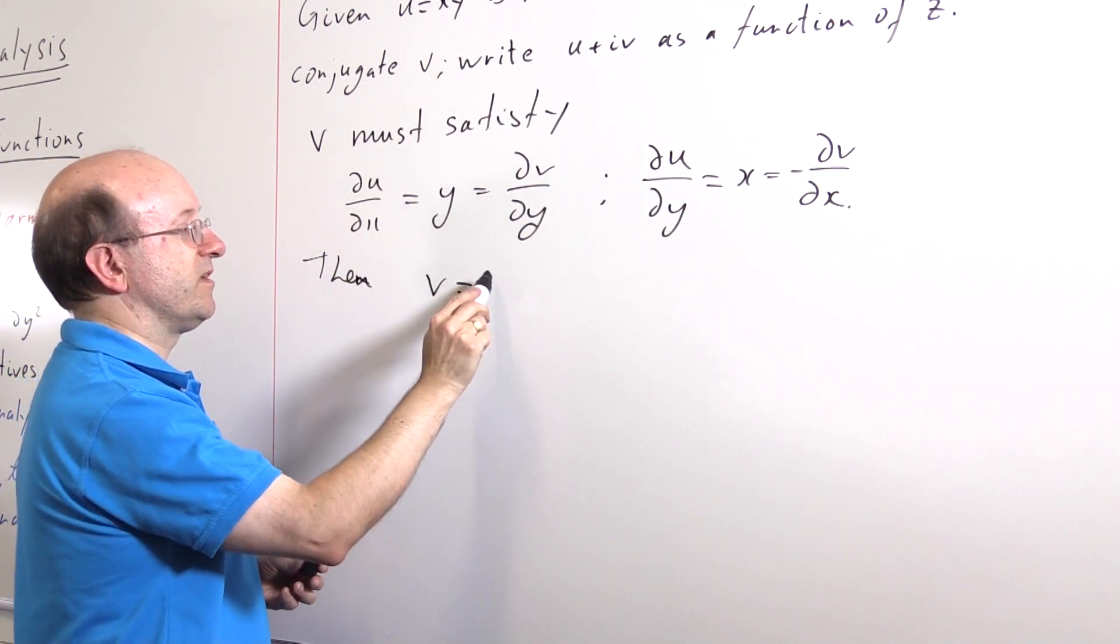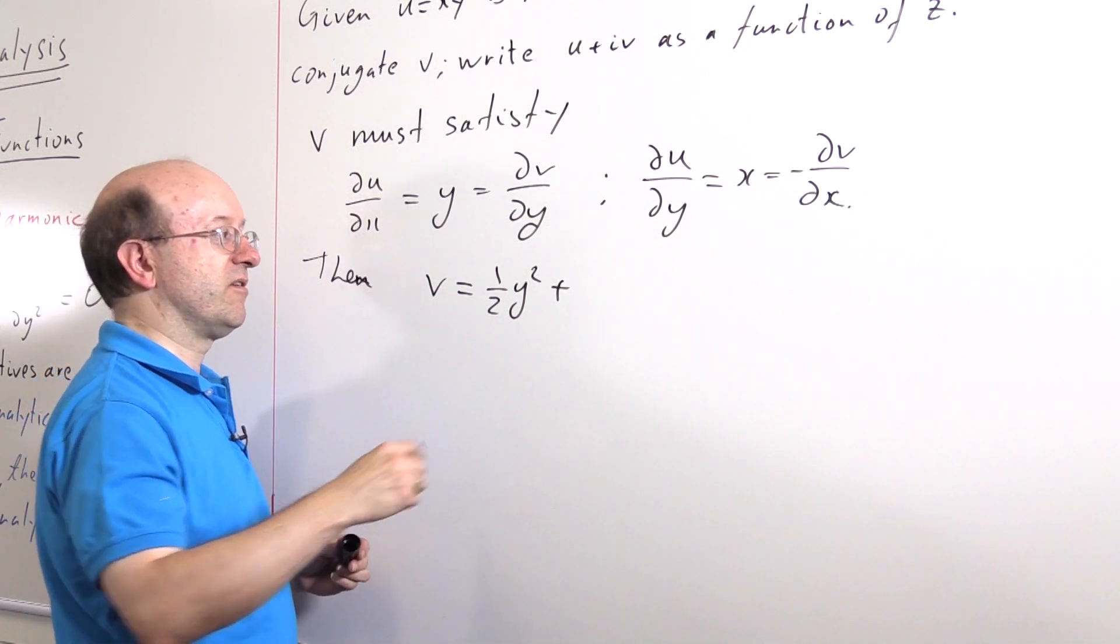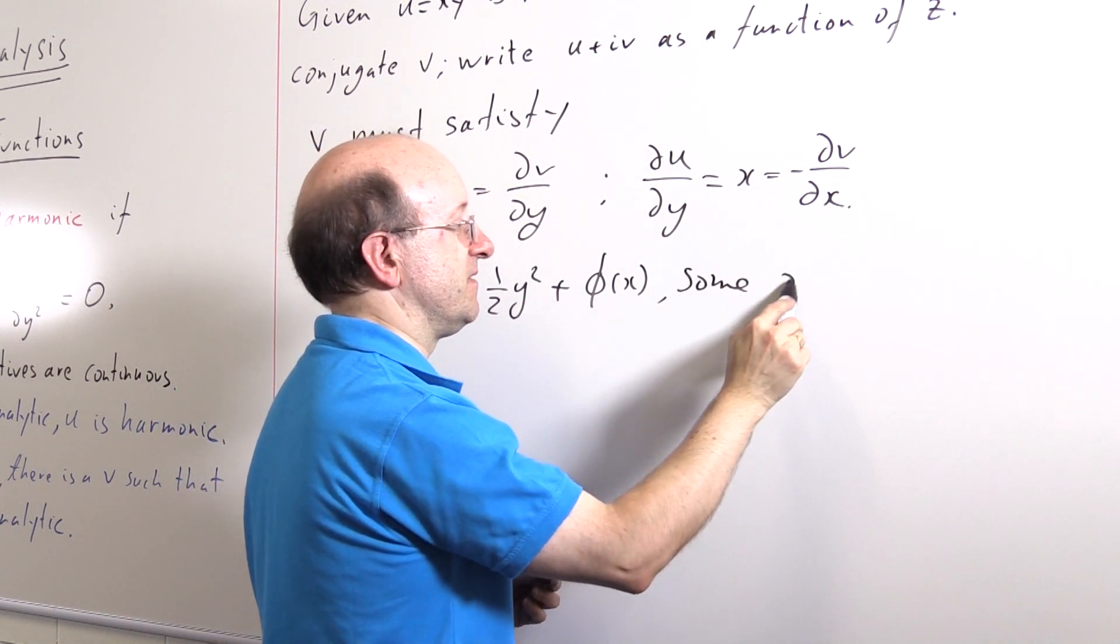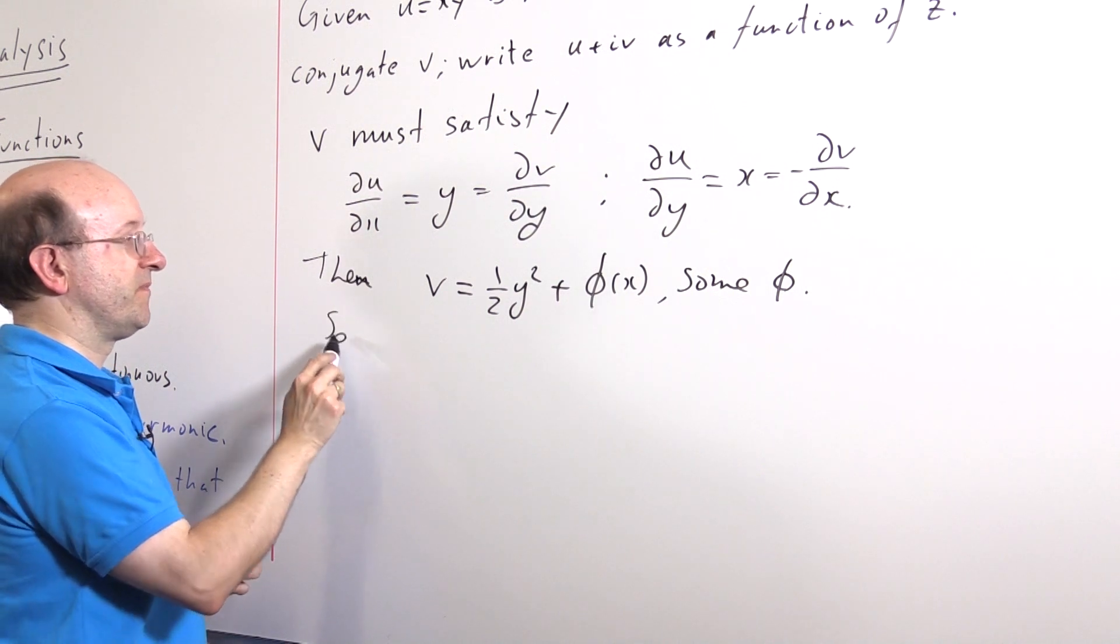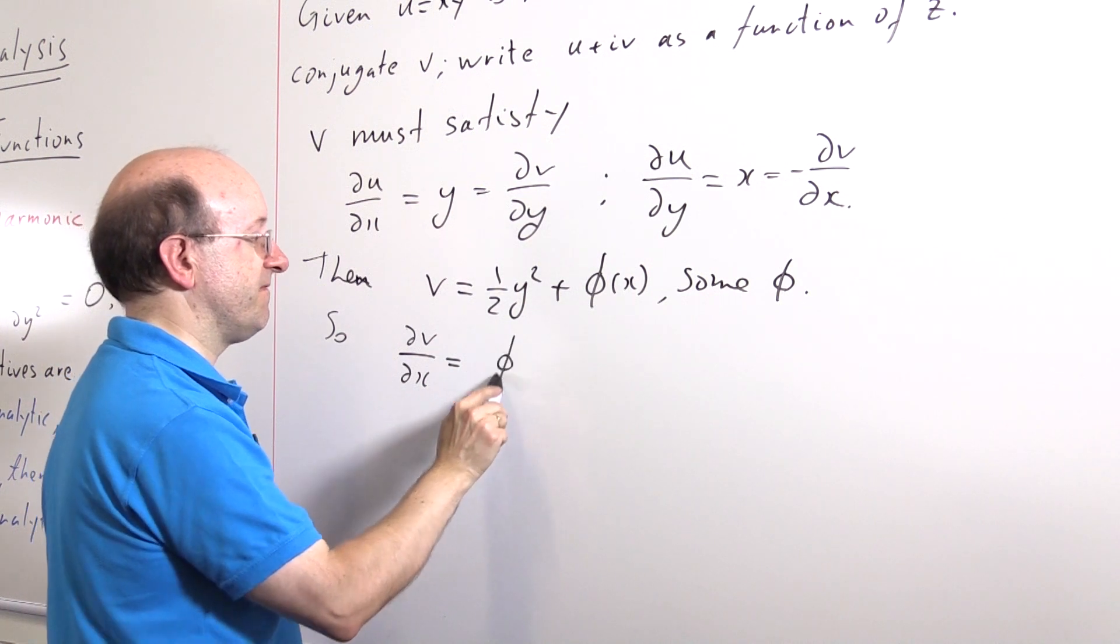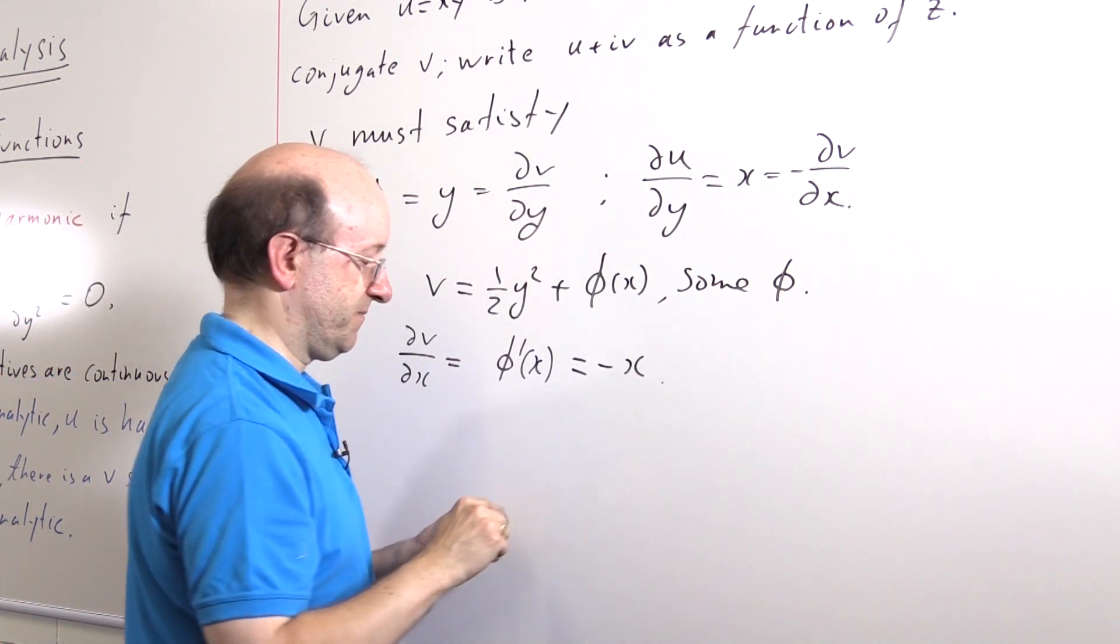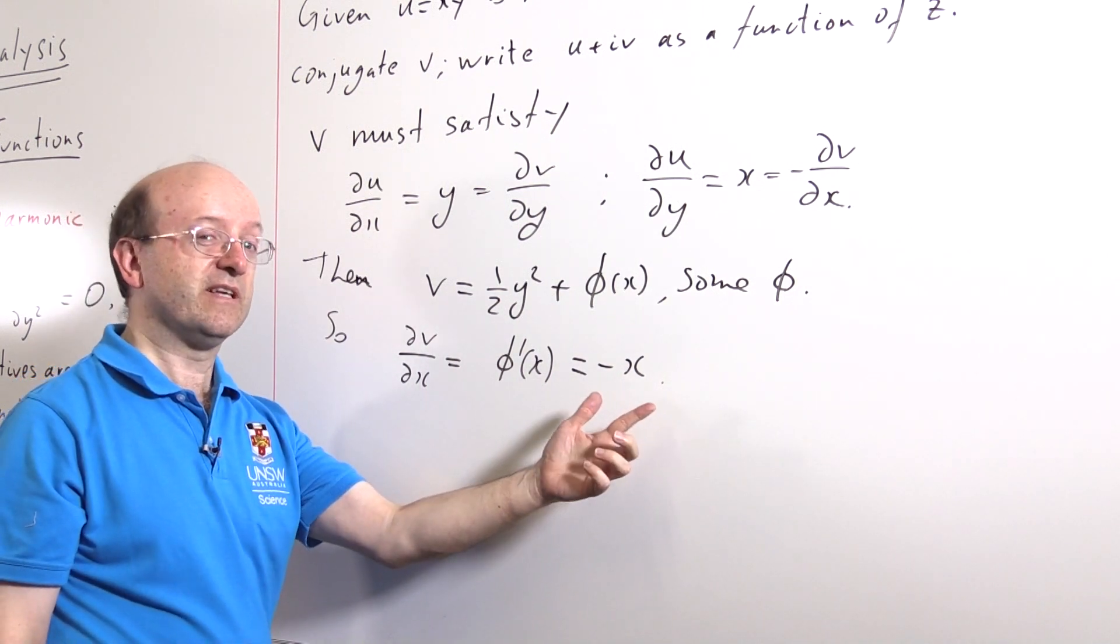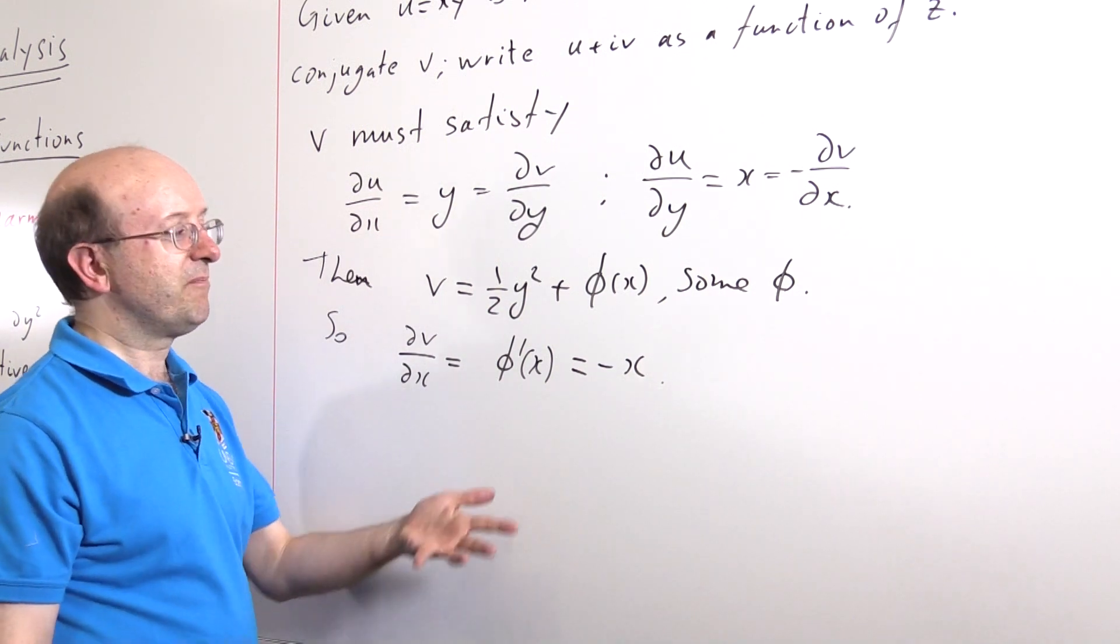Then v will be, integrating y with respect to y, one-half y² plus the arbitrary constant. Remember, solving a differential equation, you cannot forget arbitrary constants. In this case, it's actually an arbitrary function, but it's a function purely of x, φ(x). So if that's what v must look like, we're going to find out what φ is by comparing it to the other equation. It follows that ∂v/∂x is φ'(x), and that's to equal minus ∂u/∂y, which is minus x. This is a function purely of x, which is as it should be. If you end up with a problem here where this is a function of x and y, you've made a mistake.